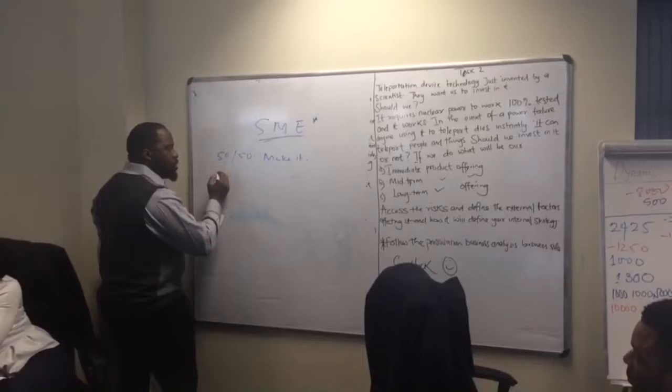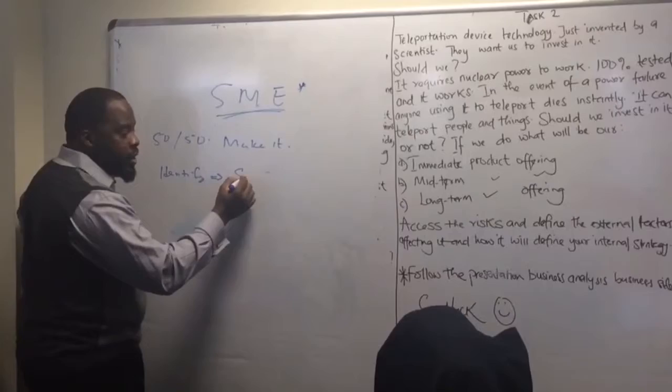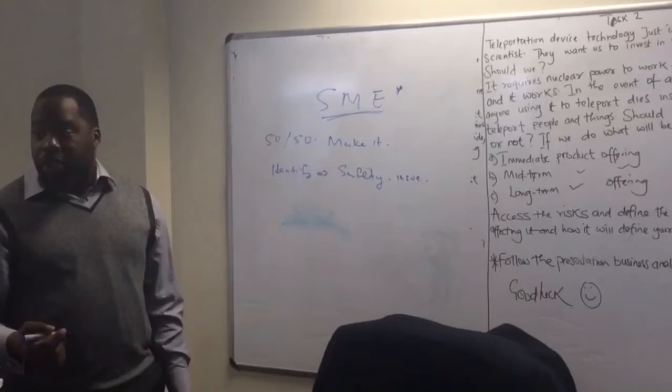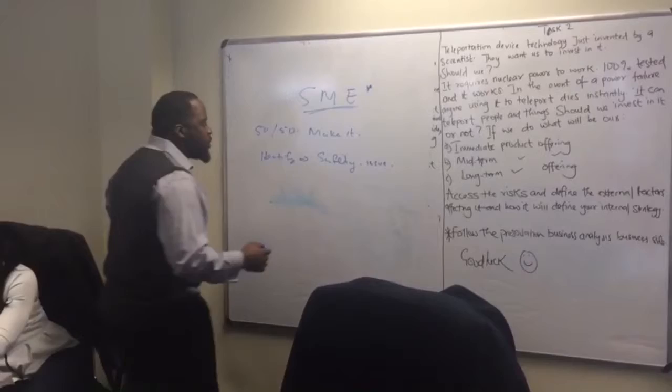The first thing is you identify the risk. What is the risk you've identified? Safety. Good, is an issue. The risk is safety. There is a strong chance that if we don't make it, if we go ahead, this bank could crash. 50% of the bank will crash, and we will get the chance it will reach the destination.